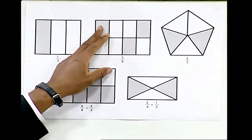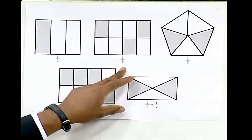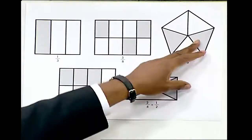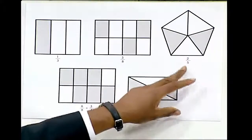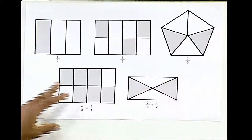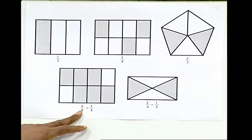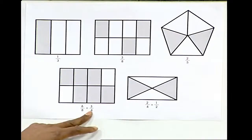This diagram shows 3 parts out of 8 parts which are shaded, which is equivalent to 3/8. This diagram shows 2 parts out of 5 parts which are shaded, which is equivalent to 2/5. This diagram shows 6 parts out of 8 parts which are shaded, which is equivalent to 6/8. 6/8 is equal to 3/4.